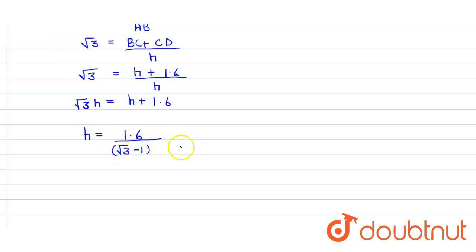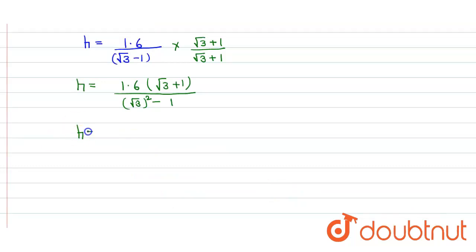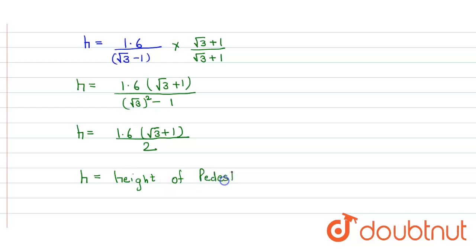We further simplify by rationalizing, multiplying by root 3 plus 1 in both the numerator and denominator. So h equals 1.6 times (root 3 plus 1) upon (root 3 squared minus 1), which gives h equals 1.6(root 3 plus 1) upon 2. Finally, the height of the pedestal h equals 0.8(root 3 plus 1) meters.